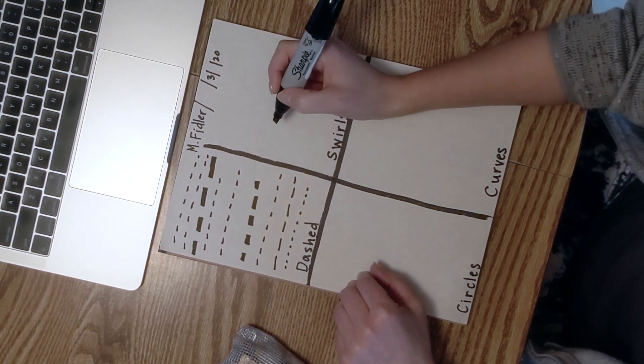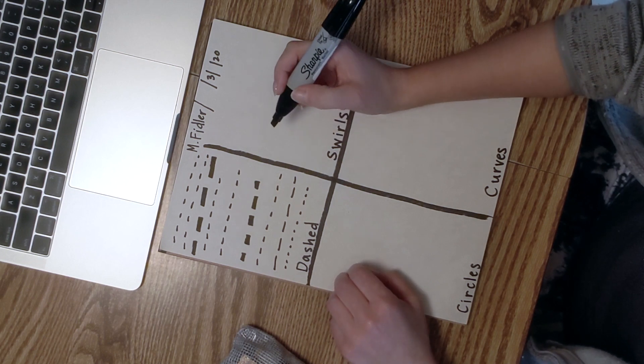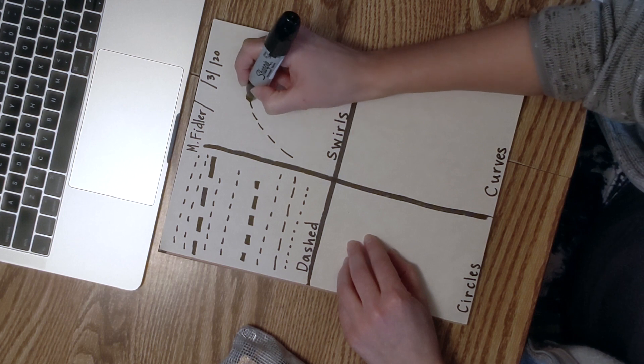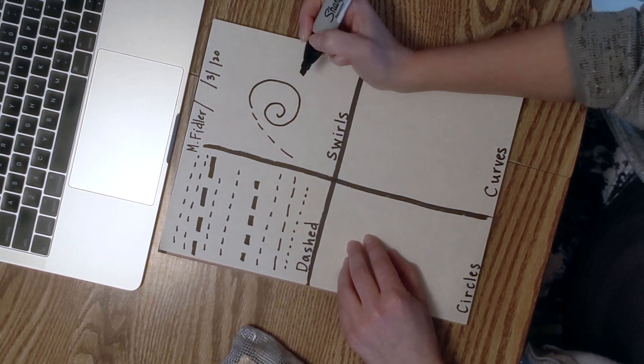Next, swirls. This one's my favorite. It's sort of like that loop-de-loop line we practiced. You can start off dashed and swirl around like that. Almost like a spiral, right?